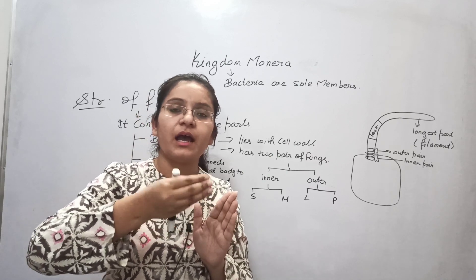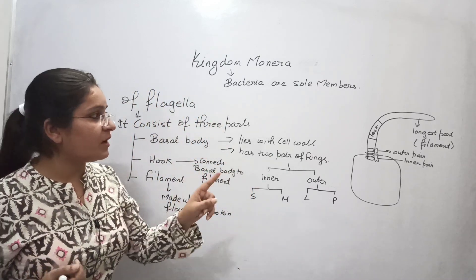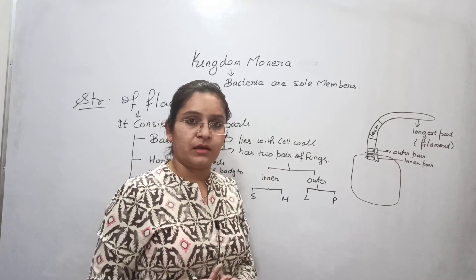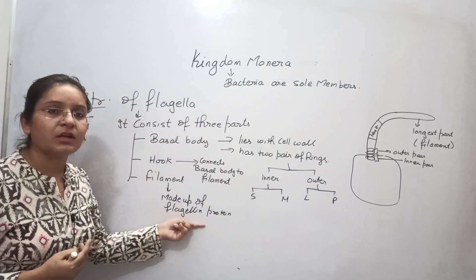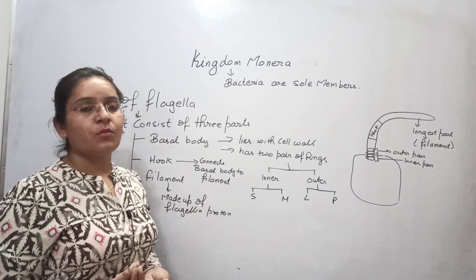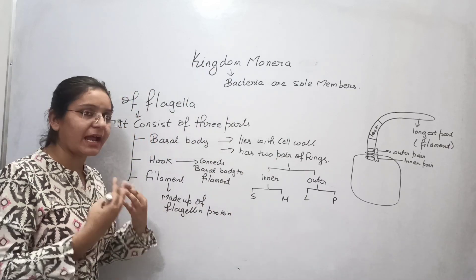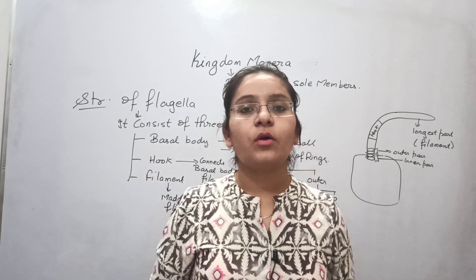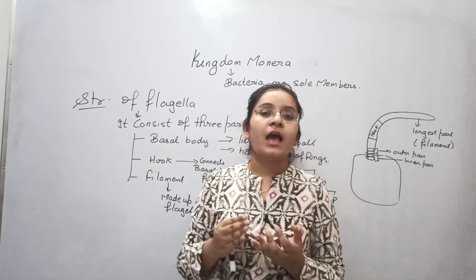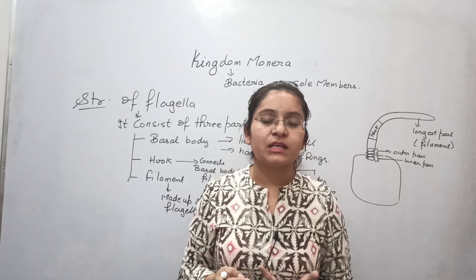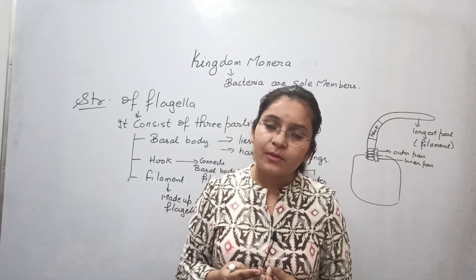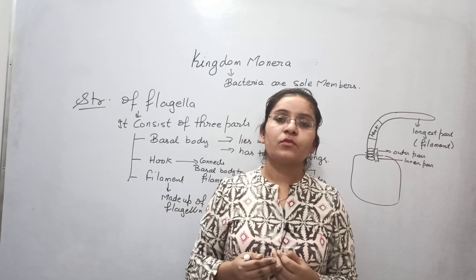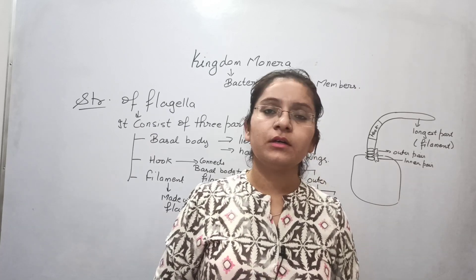The filament is the longest part of the flagella and actually helps in the movement. It is made up of flagellin protein, with monomeric units of flagellin proteins, and helps in the movement of the bacteria. Today we studied about the different shapes of bacteria, the names of bacteria based on their flagella arrangement, and the structure of the flagella. In the next class, we will study about the nutrition and respiration of the bacteria.